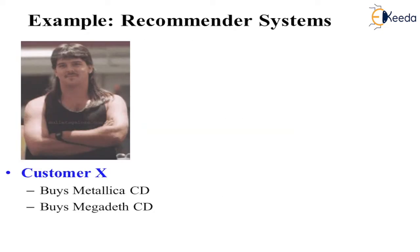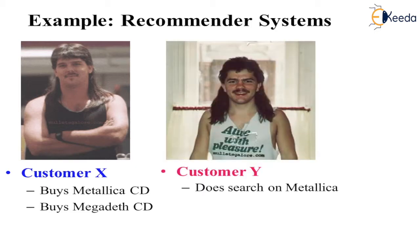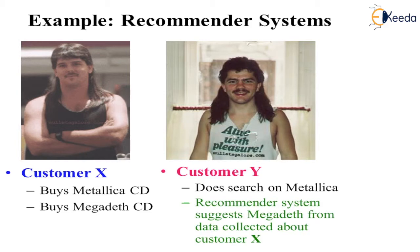Let's take an example of a recommendation system. Customer X buys the Metallica CD and buys the Megadeth CD — two different types of rock music. Now another customer Y comes and searches about Metallica. Based on that search, we can recommend to customer Y that he can also watch Megadeth for his collection.